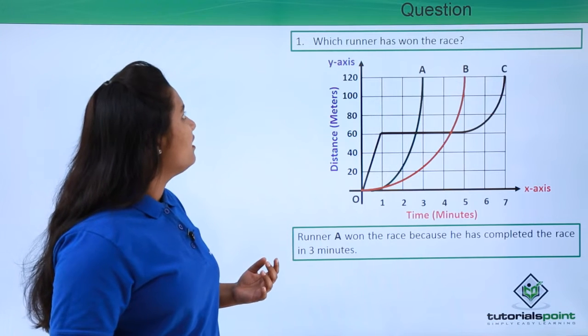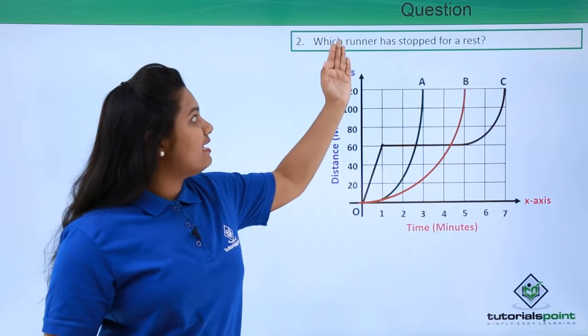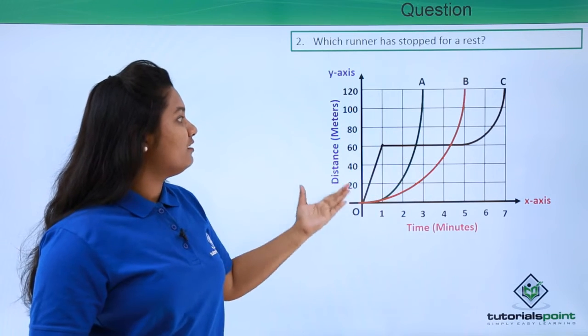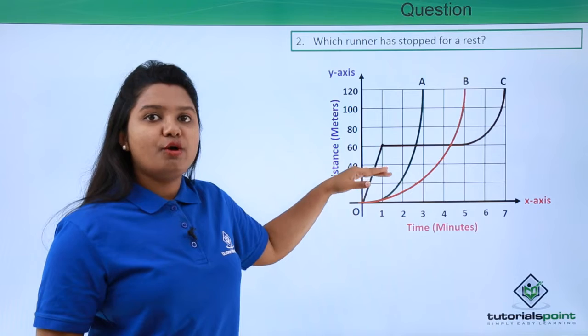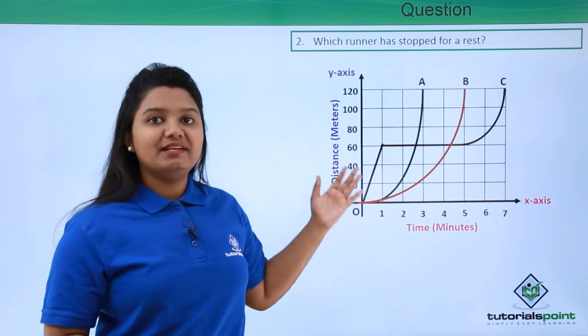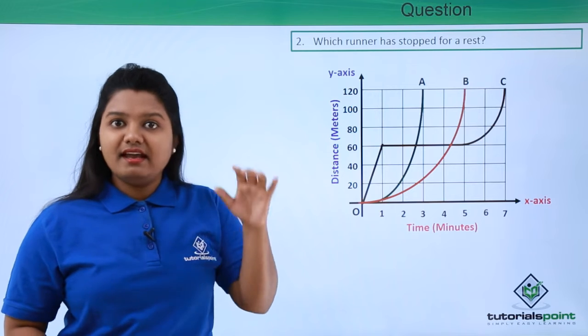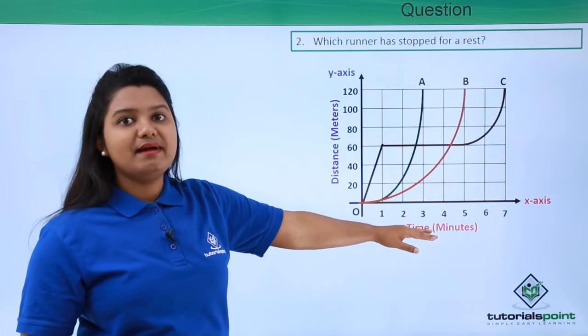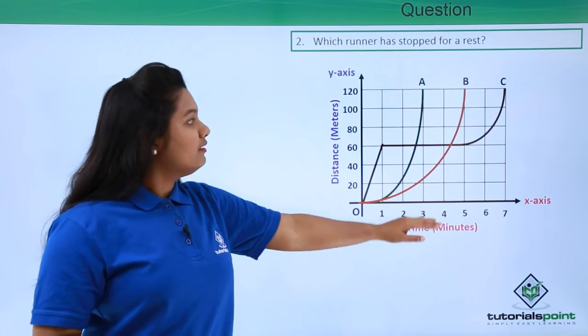Now the second question is: which runner has stopped for a rest? We need to figure out which runner is the one who has stopped in between for a rest. We know that whenever an object is at rest, its distance-time graph is exactly parallel to the time axis or the x-axis.